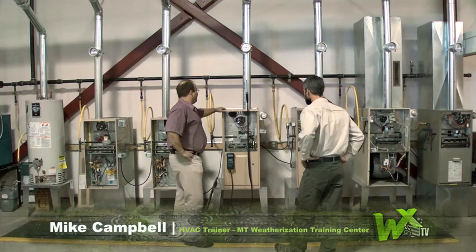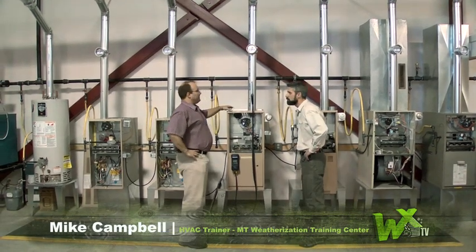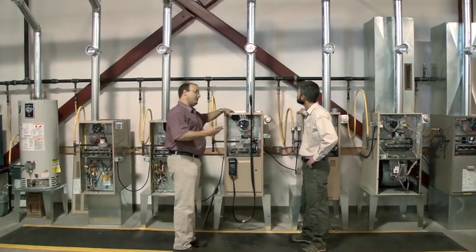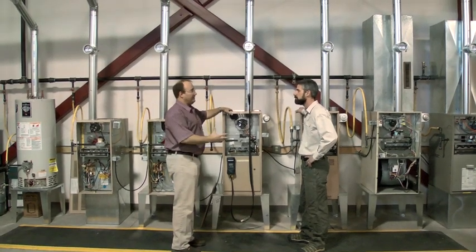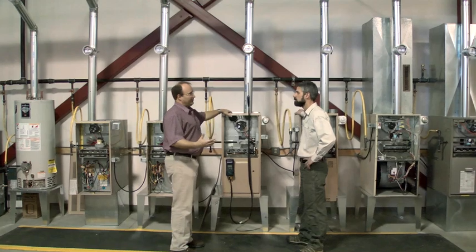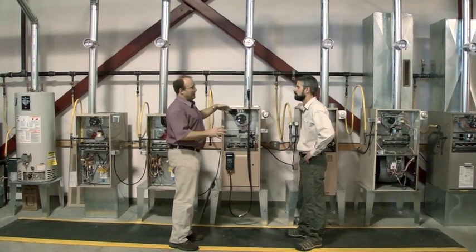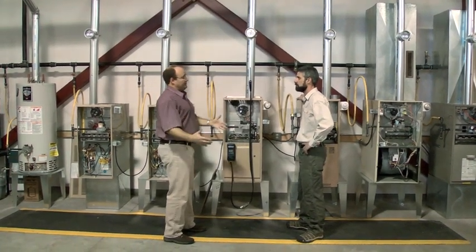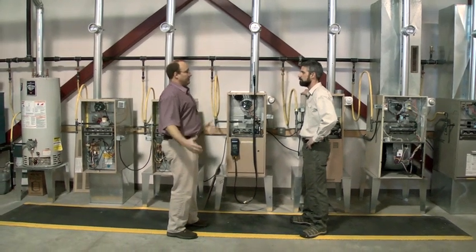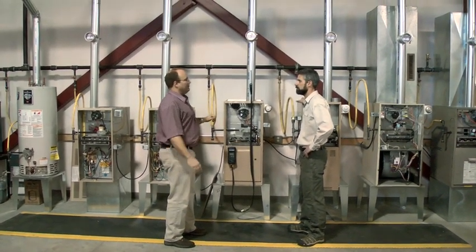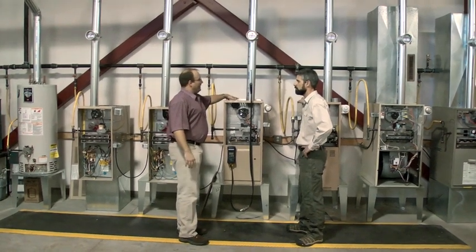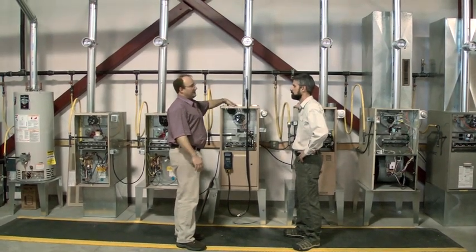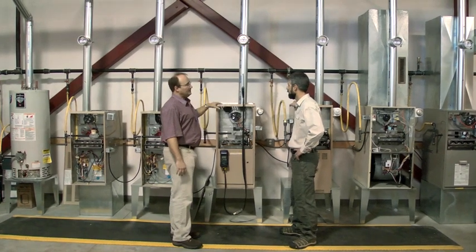Well, one of the things that a furnace that isn't running correctly can kick out is a whole lot of carbon monoxide. And when we go to weatherize a home, typically these homes have a lot of air infiltration. That air infiltration may be masking the carbon monoxide and actually dilute it.